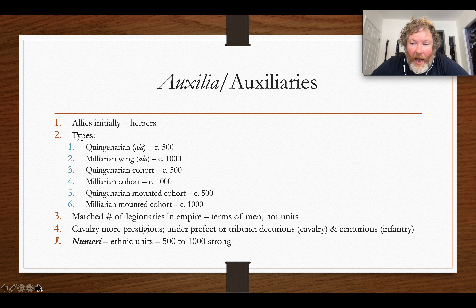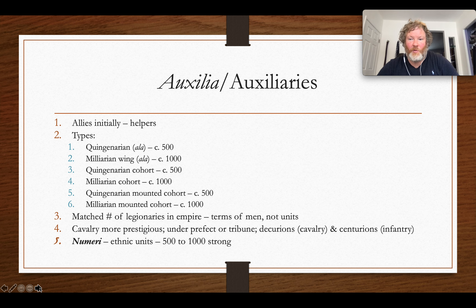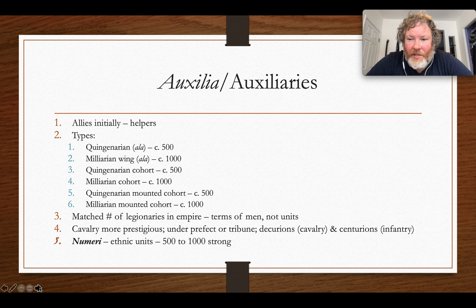There are many different types of auxiliary units, coming in various shapes and sizes — these are all approximates, though you can get slightly more exact numbers, like the 5,240 for legions. There are two main distinctions: the alae, which are the cavalry ones fighting on horseback, and then there are the cohortes, the infantry, fighting on foot. There's also something called a mounted cohort, which is a combination of the two.